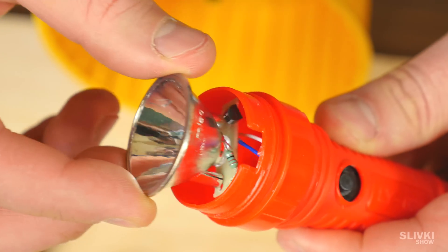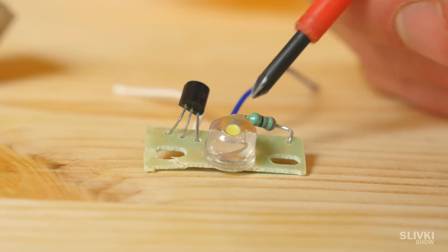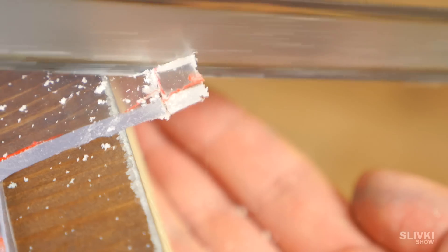Dismantle flashlight and get inside. There should be an LED and details to voltage conversion. And now we need to take a thick plastic and cut this kind of piece.